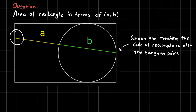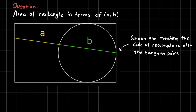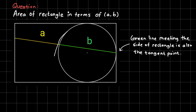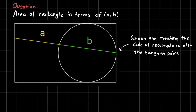The other end of this line segment can lie anywhere on the left side of the rectangle. Because of the circumference of the circle, the line is divided into two parts. We are given the length of one part as A and the length of the other part as B. The question is to find the area of the rectangle in terms of A and B.